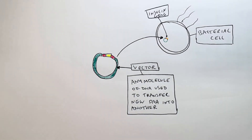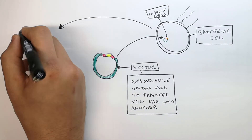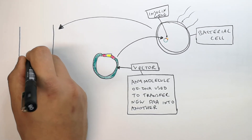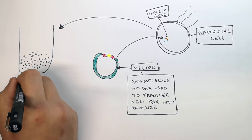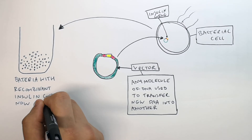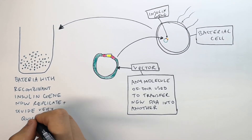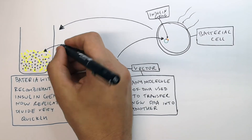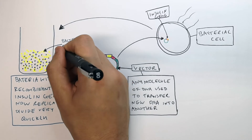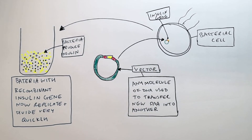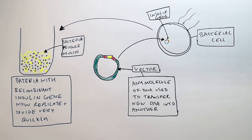The insulin gene is in the vector of the plasmid DNA. We now get a big vat and replicate the bacterial cells. Bacteria with the recombinant insulin gene replicate and divide very quickly. The insulin gene is then expressed — the bacteria now produce insulin, and it is all the same insulin because it's from the same single DNA vector.